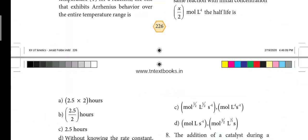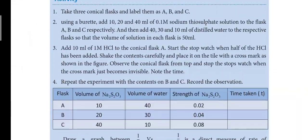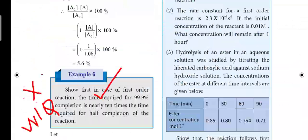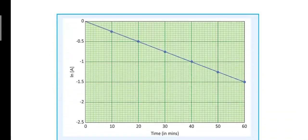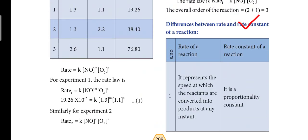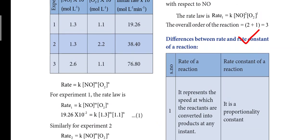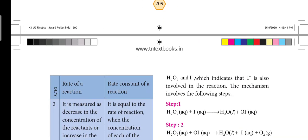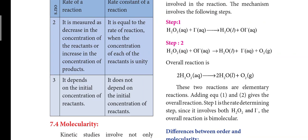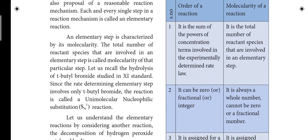From the book, there are 2 or 3 important questions I will tell you. Note that — page number 209, take a box. In the box: differences between rate and rate constant of a reaction. There is a table with points — 3 points total. This is important — one more question from the book.